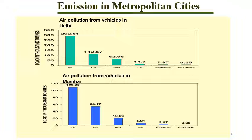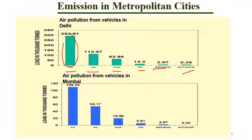Now we are going to discuss about emissions in metropolitan cities. First, air pollution from vehicles in the state of Delhi. In the x-axis you can see different air pollutants: carbon monoxide, hydrocarbon, NOx, particulate matter, benzene, and butadiene. The proportion of carbon monoxide contributing to pollution is way higher compared to the other pollutants. So carbon monoxide is one of the major air pollutants in the state of Delhi.